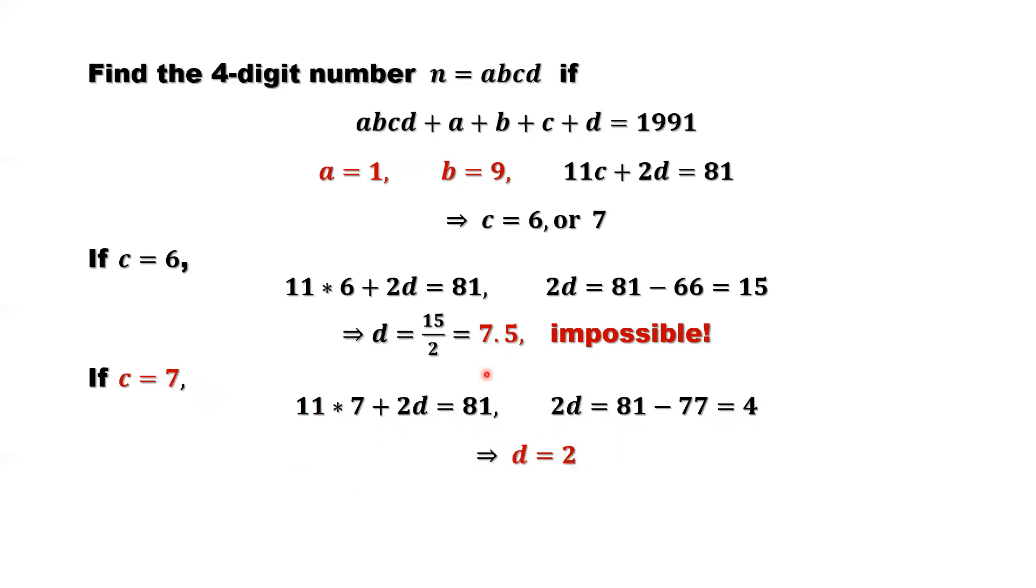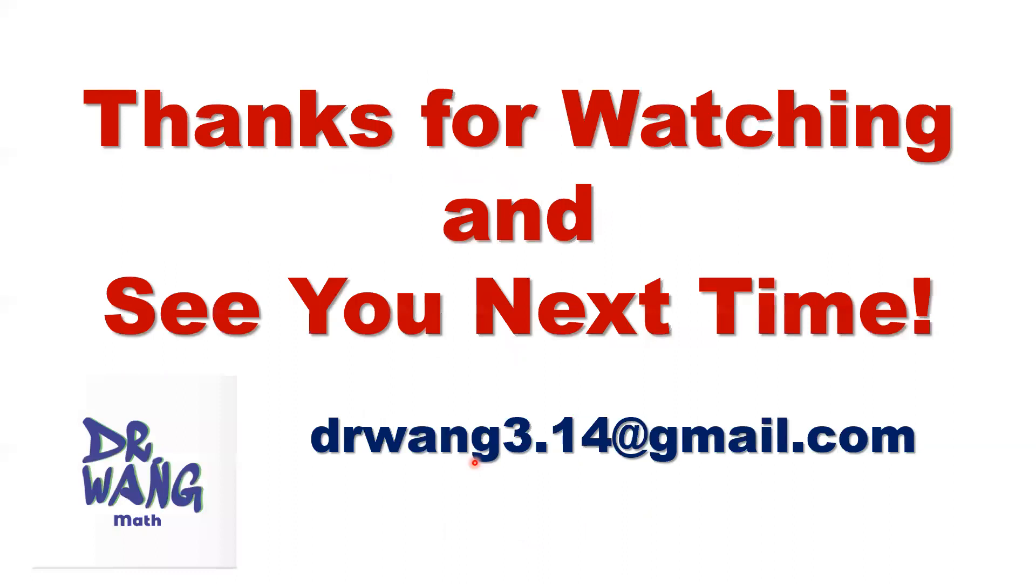So far we have 4 digits. First digit, that's 1. Second digit, that's 9. Third digit, that's 7. Last digit, that's 2. In summary. We know N equals A, B, C, D. This 4-digit number is 1972. This is the answer. Thanks for watching and see you next time.